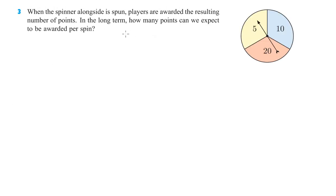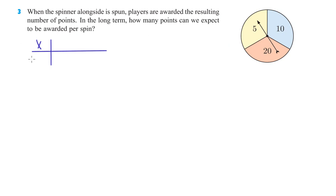Moving on to number three. When the spinner is spun, players are awarded the resulting number of points. In the long term, how many points can we expect to be awarded per spin? This looks like it's evenly distributed. I'm going to make a little probability table here — it just helps keep things organized. So we've got probability of X equals X.